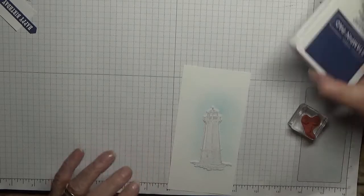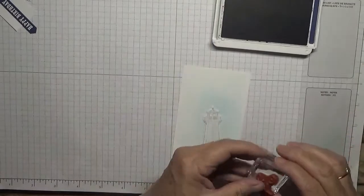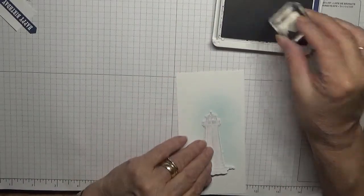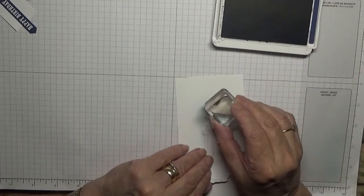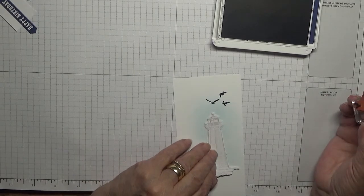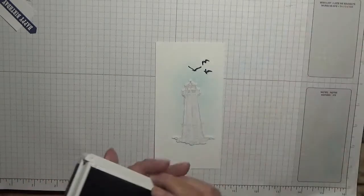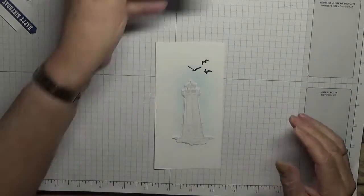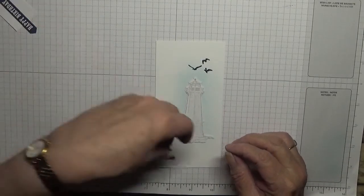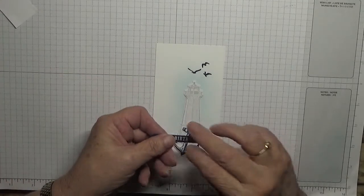And we need to put our birds on. Now I always seem to over-stamp with these birds, so I'm just going to put them there. My lighthouse is going to go there, my anchor on there, and then my happy birthday on there.